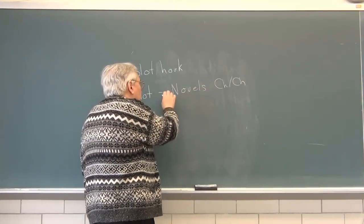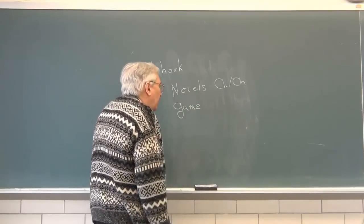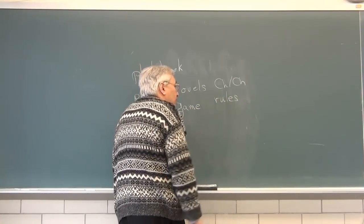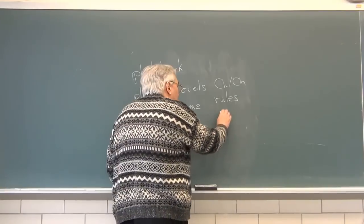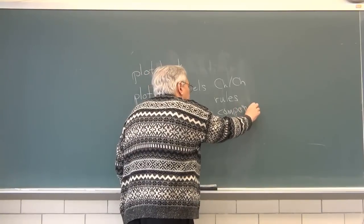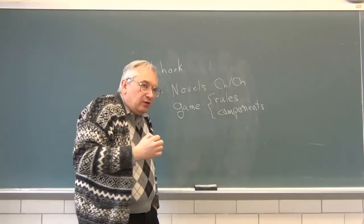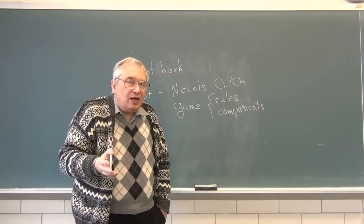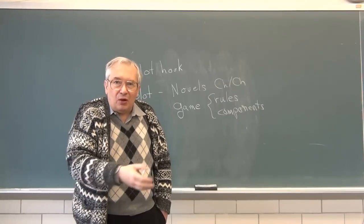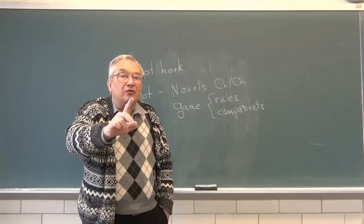In a game, the thing that corresponds to the plot could be described as the rules, which tell the game what to do, and the components, which are the things you do them with. The amount of freedom you have given rules and components can vary a great deal. Nonetheless, you have rules and components and things you can do them with. I will now use a role-gaming illustration of freedom.